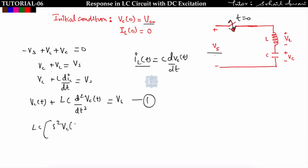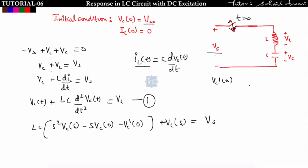Applying the Laplace transform, I get: LC[s² VC(s) minus s·VC(0) minus VC'(0)] plus VC(s) equals Vs/s. Now, what is VC'(0)? Since IL(t) equals C·d(VC)/dt, we get C·VC'(0) equals IL(0). Since initially the current in the circuit is zero, VC'(0) equals zero.